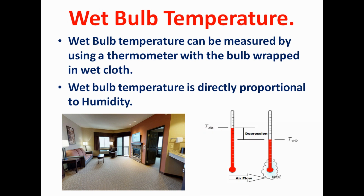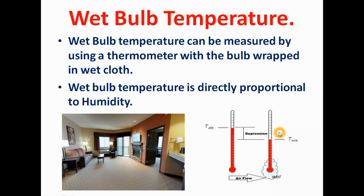Wet bulb temperature is directly proportional to the humidity of the surrounding air. If the humidity of the air is more, then the wet bulb temperature will be more. Suppose our surrounding air has a relative humidity of 100% — in such condition, the temperature difference between dry bulb temperature and wet bulb temperature is zero. That means this depression will be zero when our surrounding air has 100% humidity.